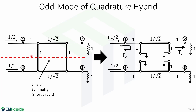For odd mode, we have an incident wave of amplitude 1/2 at port 1 and another incident wave of amplitude minus 1/2 at port 4. Because of the symmetry, the circuit can be bisected along the axis of symmetry, and for odd mode, we replace the bisections with short circuits (ground). At port 1, we have an incident wave of amplitude 1/2, a reflected wave gamma-o for odd mode, and a transmitted wave TO.